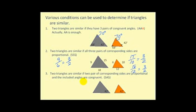Lastly, two triangles are similar if two pairs of corresponding sides are proportional and the included angles are congruent. For example, if one side is 15 and its corresponding side is 10, another side is 18 and its corresponding side is 12, those sides are proportional, and because the angles formed between those two sides are congruent, this guarantees similarity. This is called side-angle-side, or SAS.